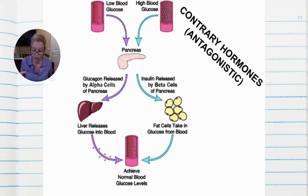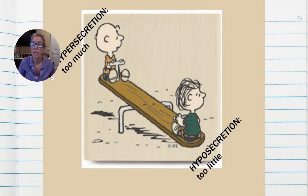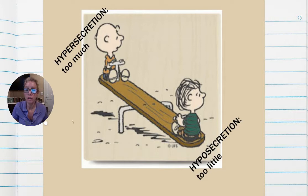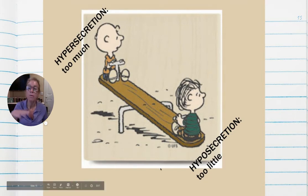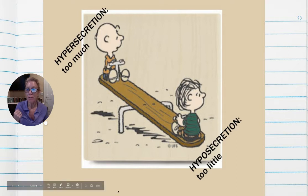Antagonistic hormones work together to maintain homeostasis through negative feedback — they have opposite effects. When things go wrong: hypersecretion means secreting too much of a hormone, like hyperthyroidism. Hyposecretion means too little. In your notes: hypersecretion is too much, hyposecretion is too little.